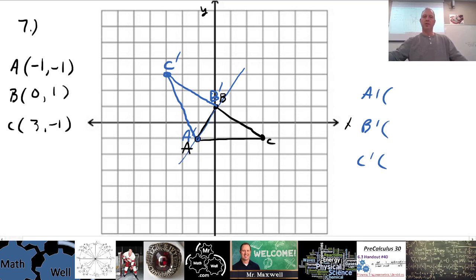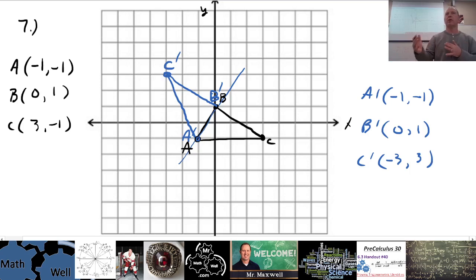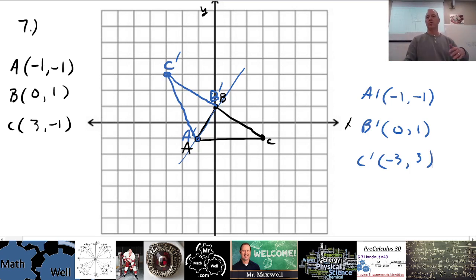A prime is the same as A, B prime is the same as B, and C prime is going to be (3, 1) — the reflection of C across line AB. Label all the vertices clearly. That's the first part of question seven: draw the original triangle, use one side as the reflection line, draw the reflection, and label the vertices of both triangles.